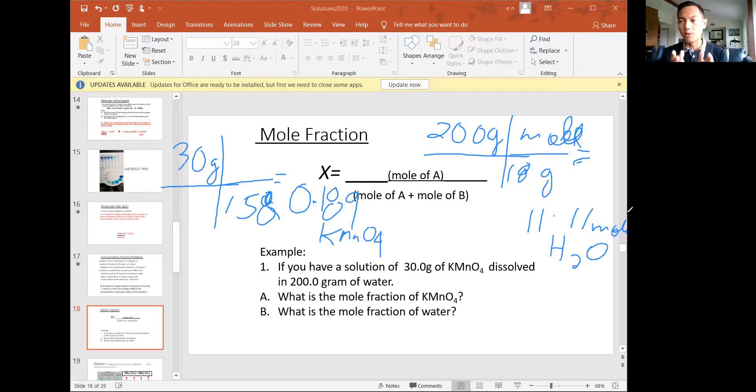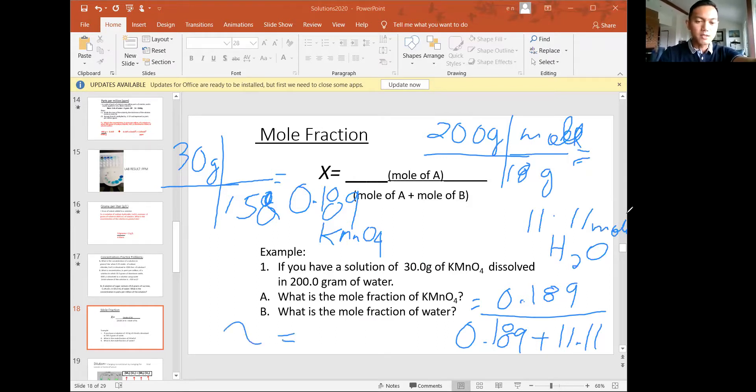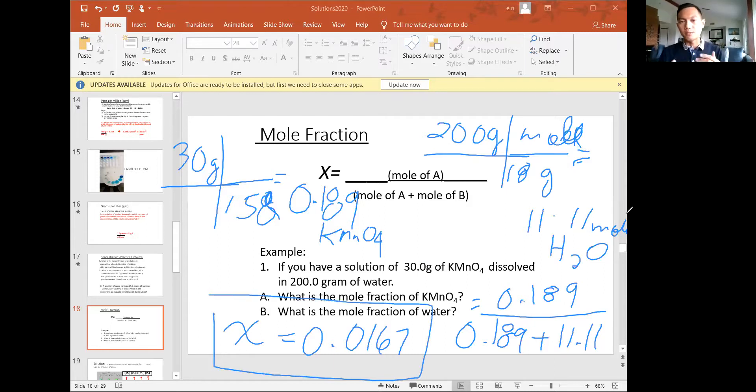For part A, it's asking what is the mole fraction of KMnO4? So whichever one you're looking for, that's the one that's going to go on top. So mole fraction of KMnO4 would be 0.189 divided by, and then at the bottom is the total moles. So we have to add those two data points that we have, 0.189 plus the moles of water that's in that solution. If calculated correctly, we're going to end up with a mole fraction. And I'll just write it here. The symbol of mole fraction is this Greek symbol that looks like an X, a cursive X. And it is, the value is 0.0167. There is no unit for mole fraction, because it's the ratio of how many of one component over the entire thing. So there's no unit for it. The unit gets cancelled out.